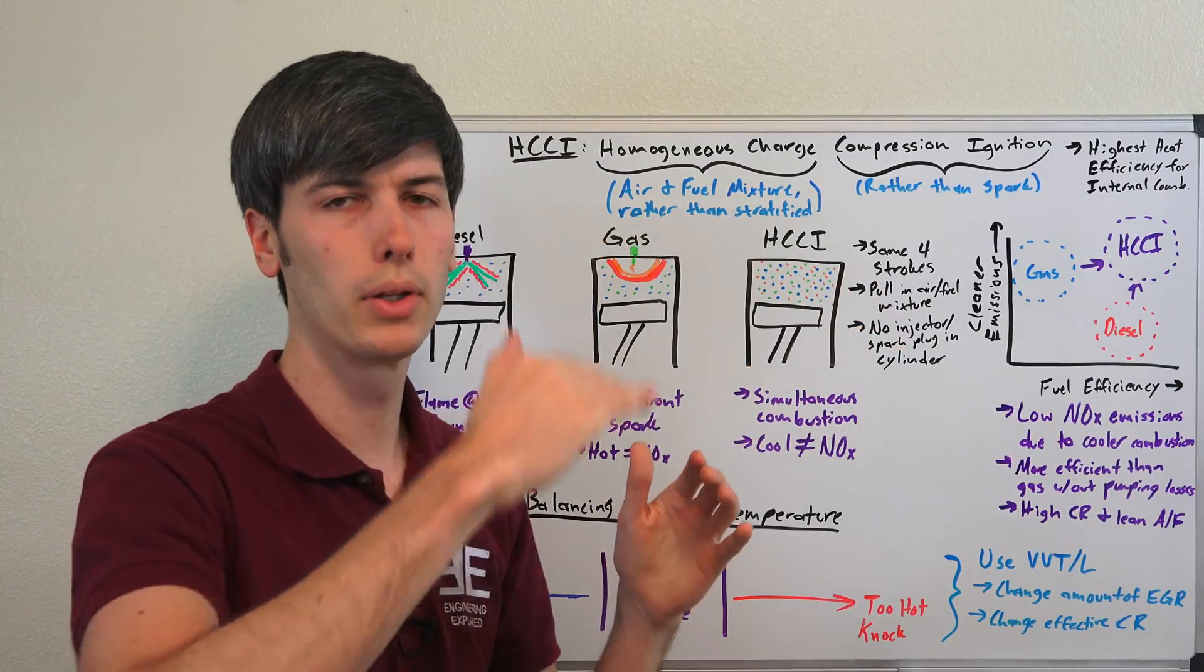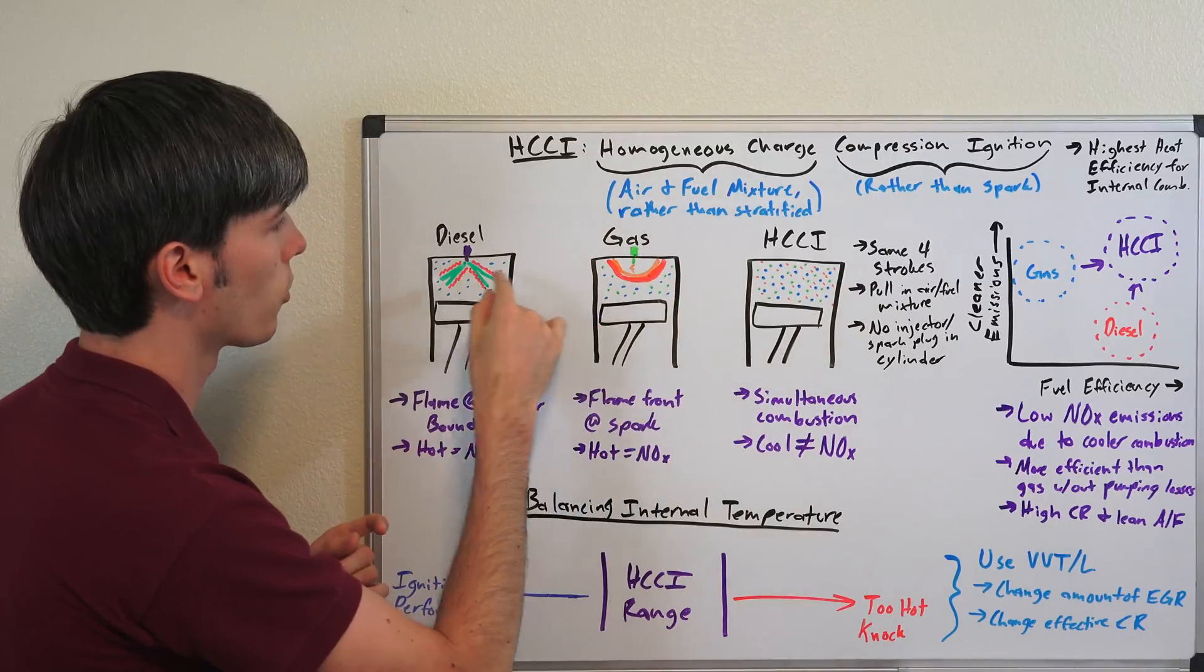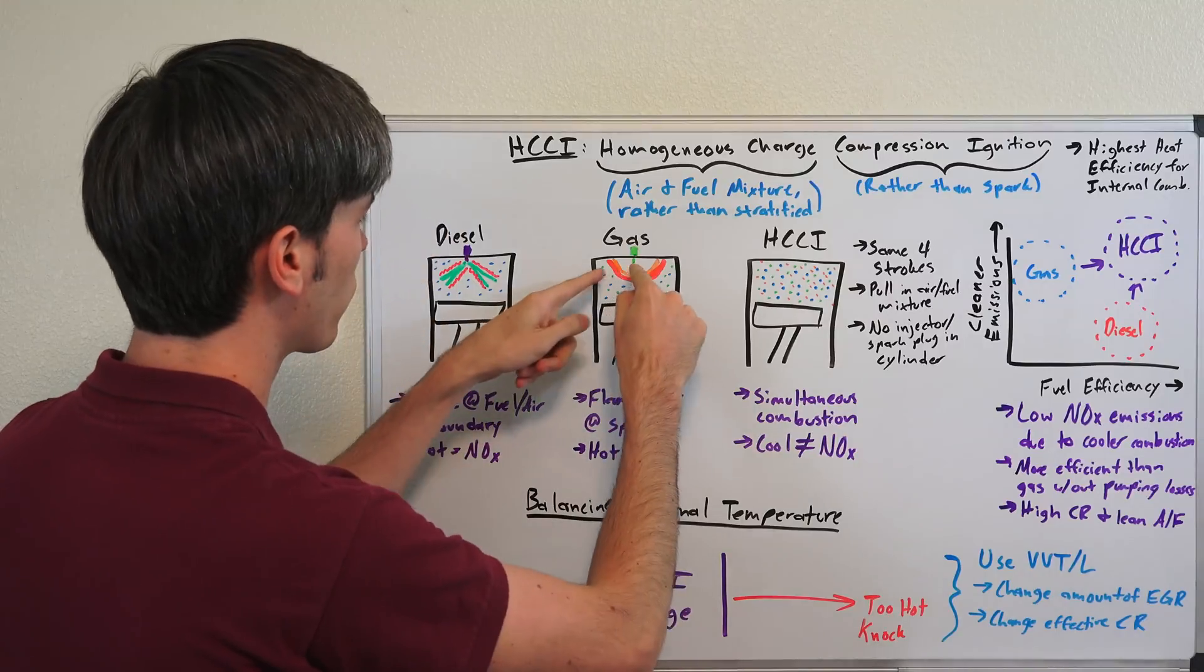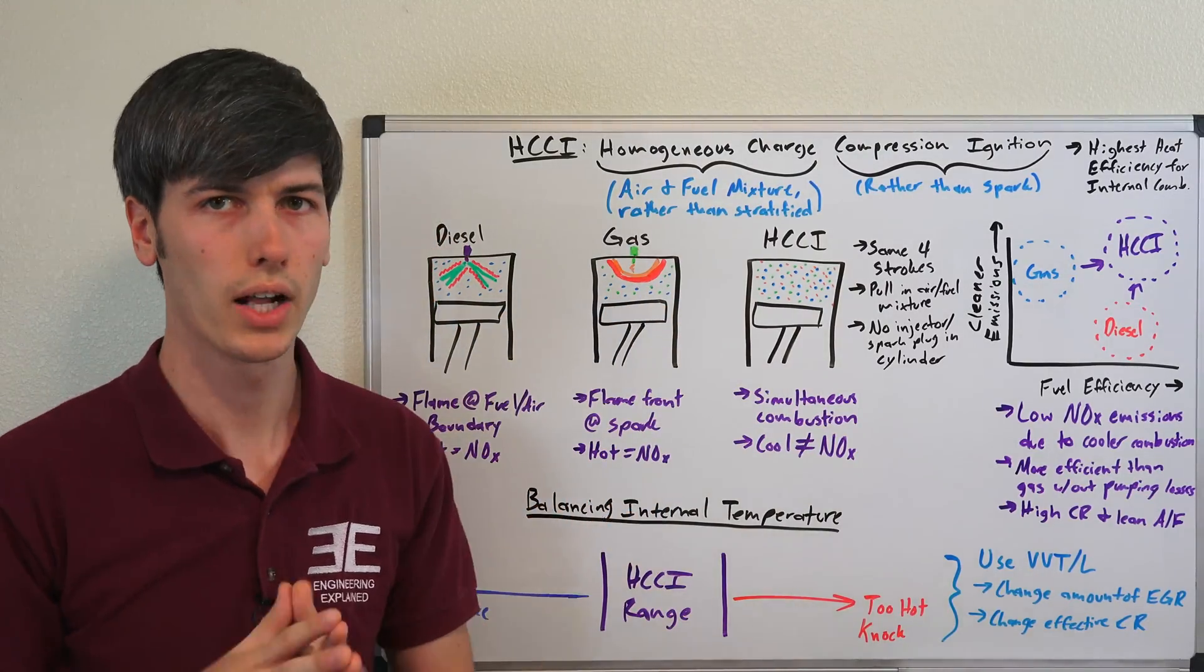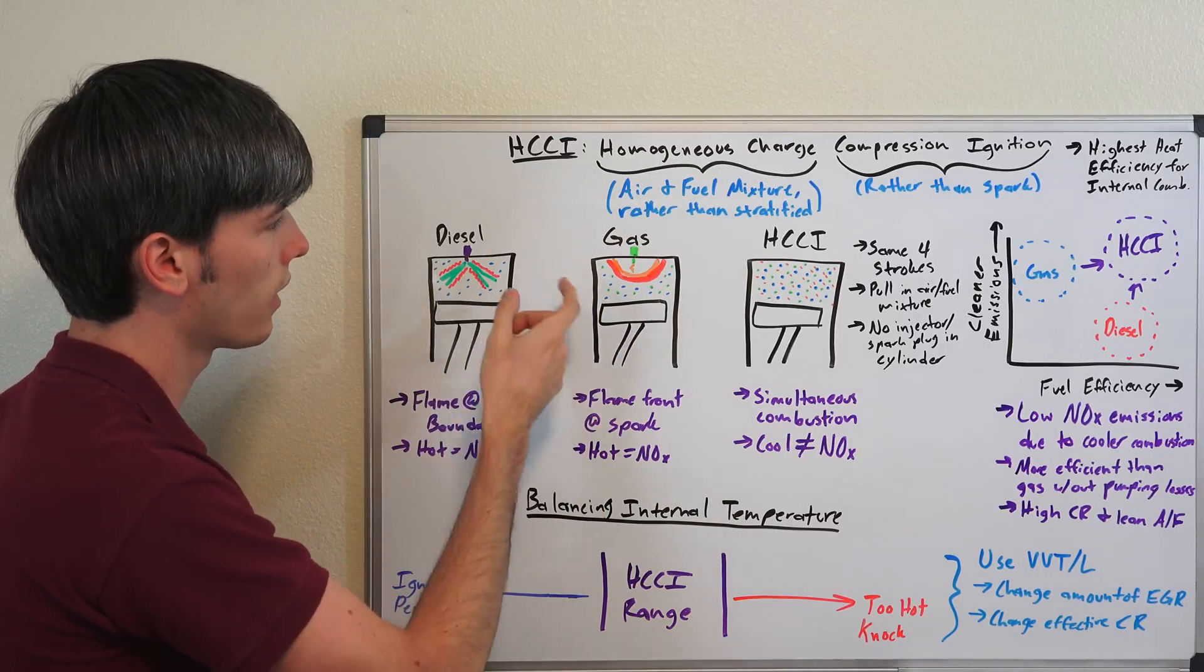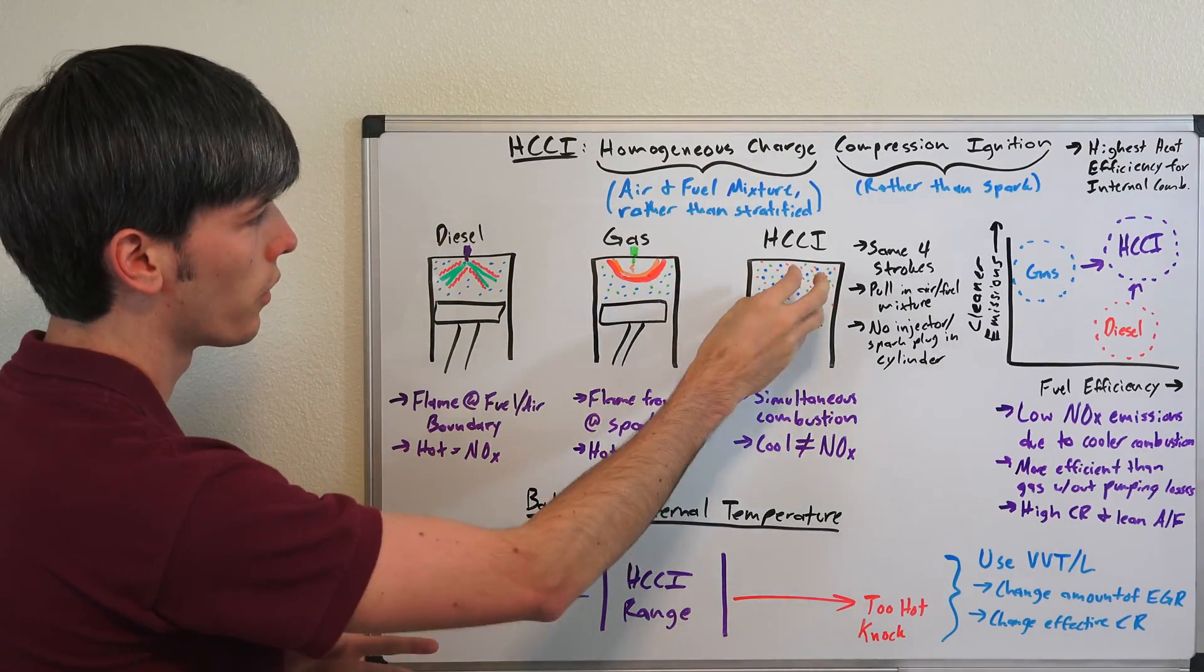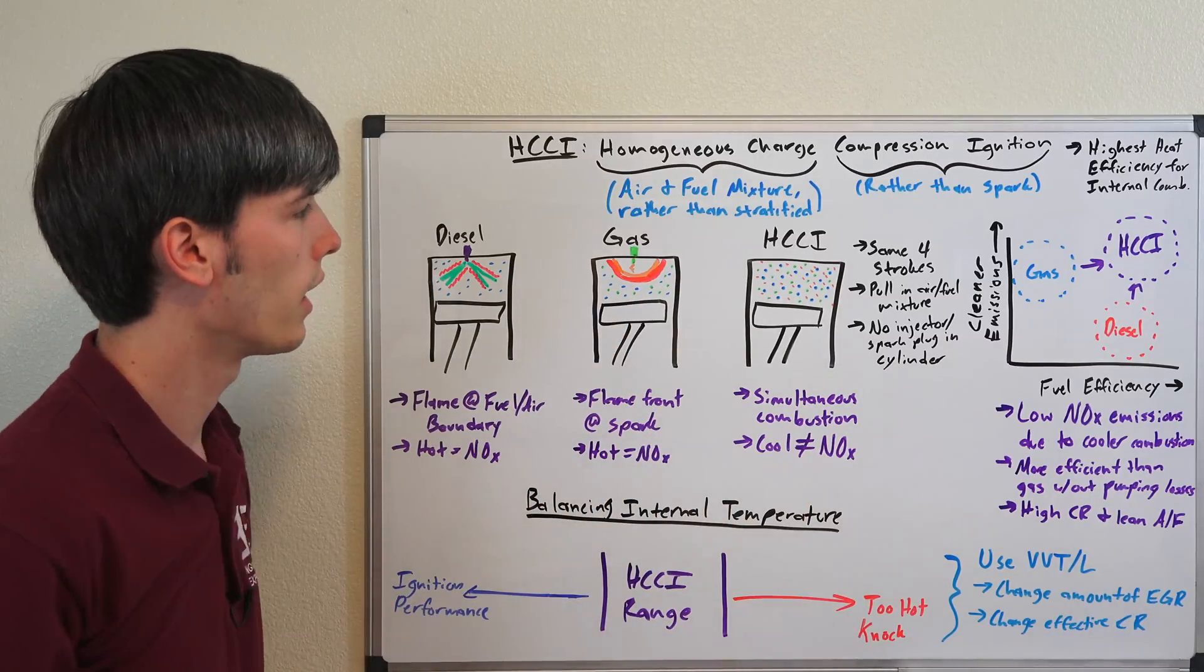Now in an HCCI engine, you're going to pull in that air fuel mixture and then what you're going to do is compress it and instead of having an ignition source like you do with diesel or gasoline, the idea is to have all of this mixture simultaneously combust as you're compressing it. So it's not going to have this flame front traveling out and the big advantage of not having that flame front is that you're not going to create your nitrogen oxide. So it's going to have much better emissions as a result of that because this boundary layer where you have that flame in both gasoline and diesel engines gets very hot and that very hot area is what helps create, gives the chemistry which allows for creating nitrogen oxides and so this will run much cooler internally and as a result you won't have these peak temperatures and so you won't have these NOx emissions.